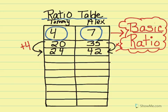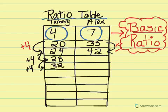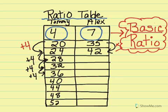Based off of that, I can continue counting by 4. 24 plus 4 is 28. Add another 4, which gives me 32. And I can keep filling it out all the way to the bottom. Each time, I'm just adding 4 on Tommy's side. Over here on Alex's side, I'm going to be counting by 7's, because his constant rate is 7.